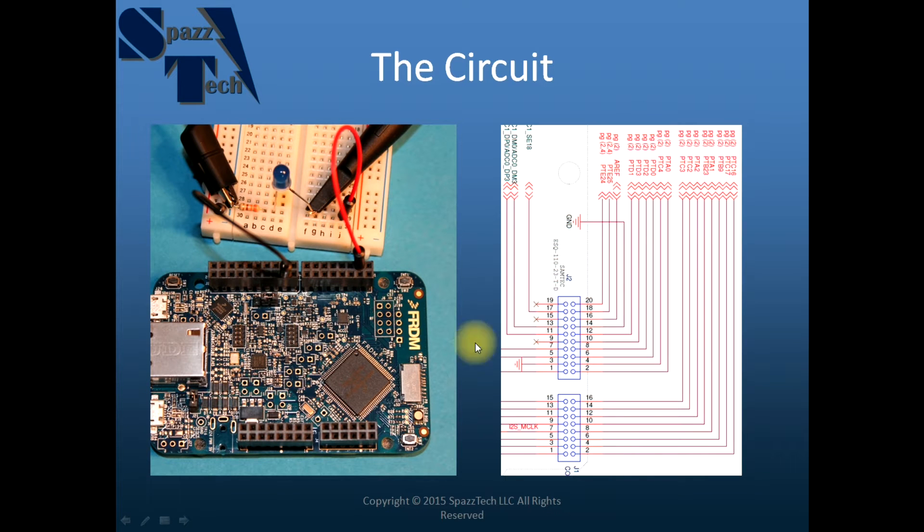And just to review the circuit itself, here we have a picture of the Freedom Board with the circuit. We have pin 4 of J1 connected to the anode of the LED as well as the probe of my oscilloscope. And then we have a current limiting resistor.